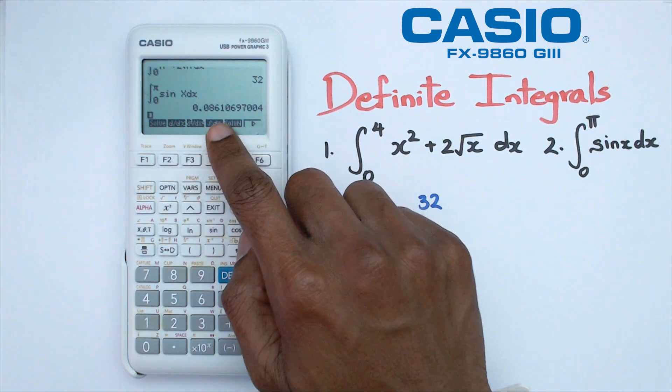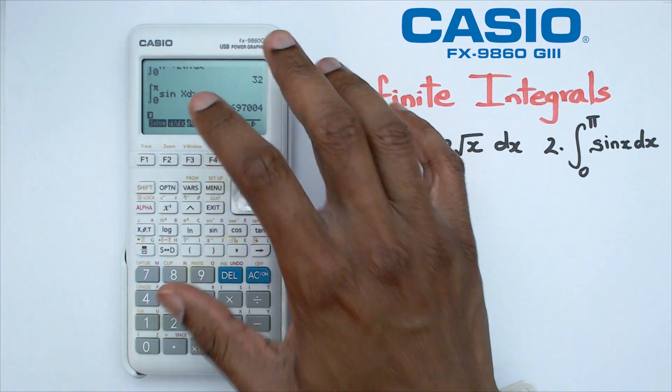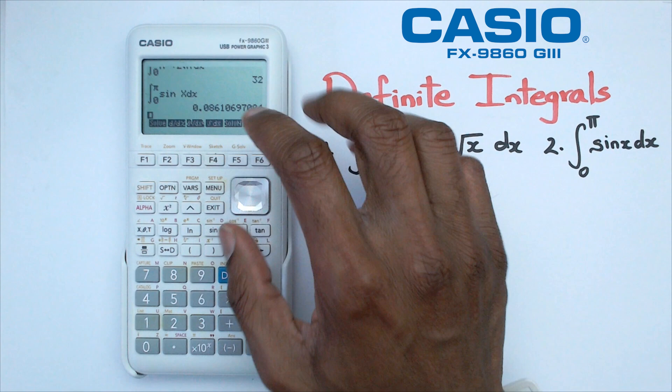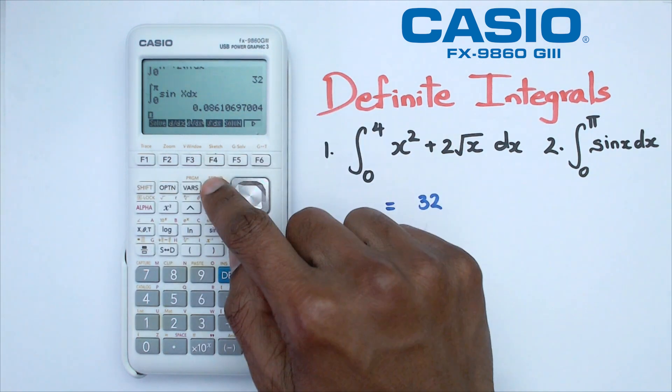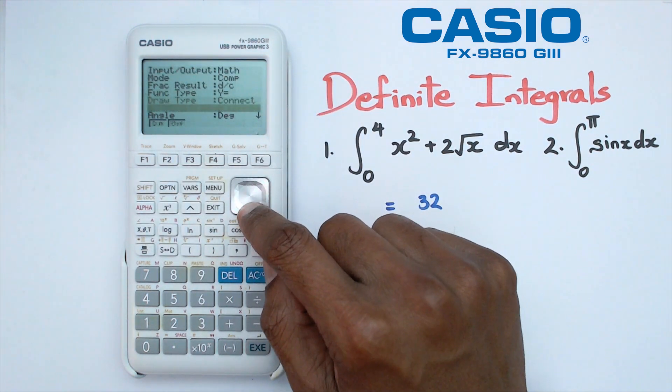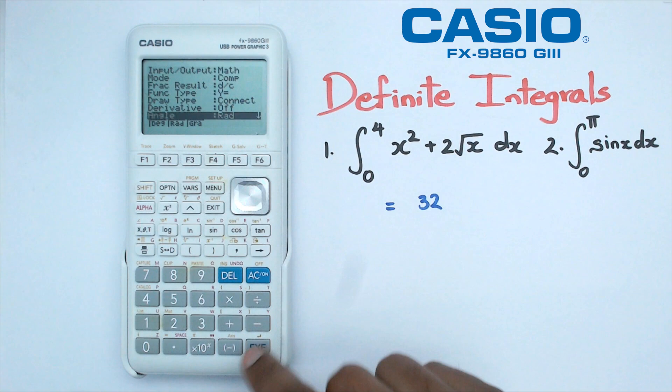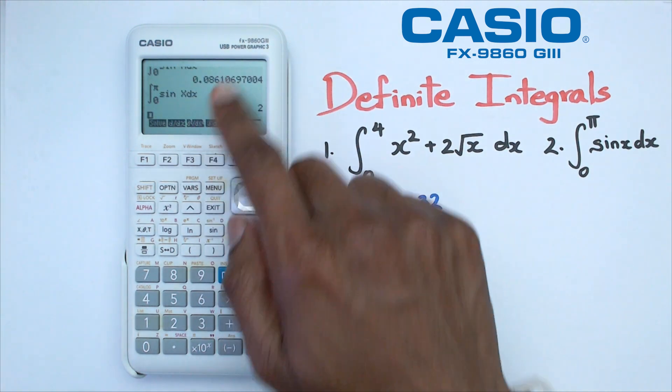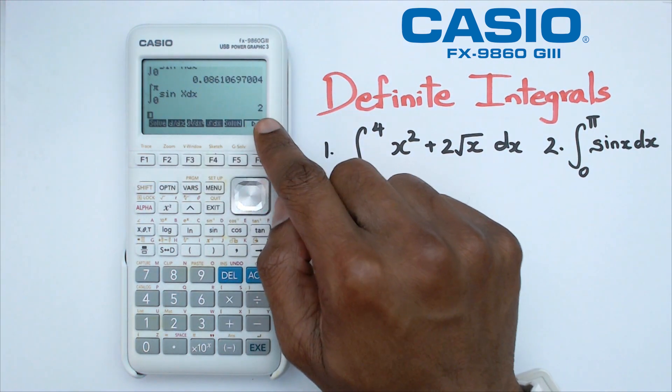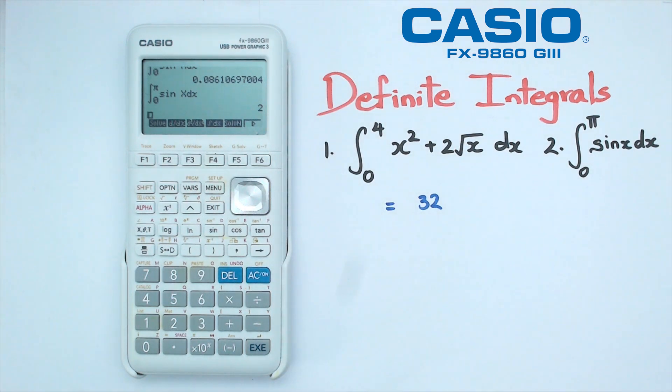This is incorrect because the calculator is in degrees mode. Go back to setup and change from degrees to radians. Once we do that and redo the question, you'll get the right answer, which is 2.